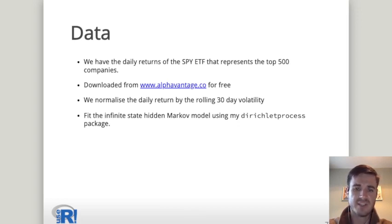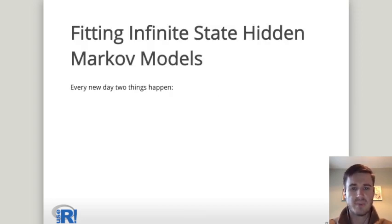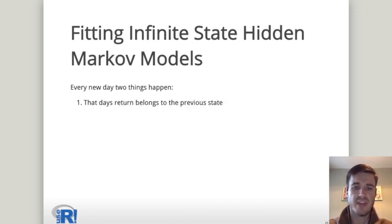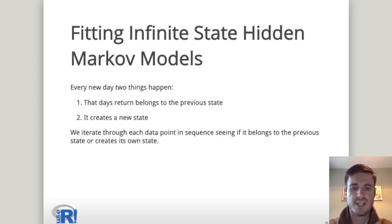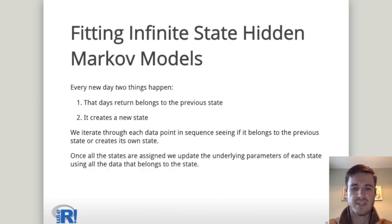We then fit the infinite state hidden Markov model using my Dirichlet process package. This fits the model by doing two things. Every day we check whether that data belongs to the previous state or whether it should create its own new state. We go through each data point in sequence asking this question and seeing if it belongs to the previous state or should create its own. Once all the states have been assigned, we then update the underlying parameters of each state using all the data that belongs to that state. Then we repeat this process until it has converged.